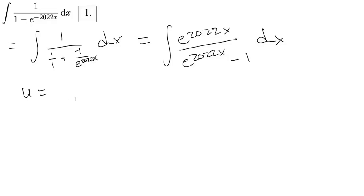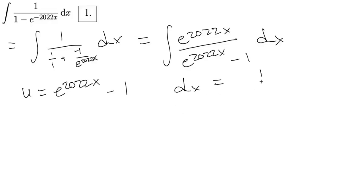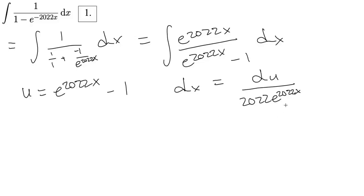And if you just let u equal to e to the 22x minus 1, we get dx is equal to du divided by 22 times e raised to the power. So if you actually substitute this in, this will just cancel out.